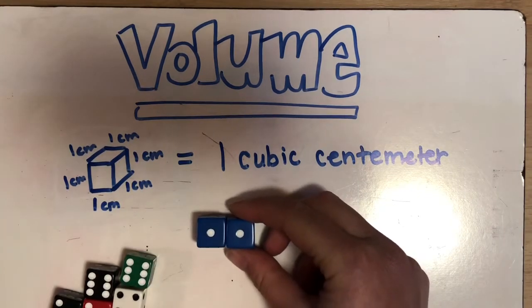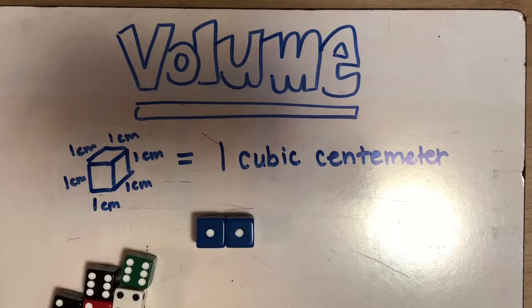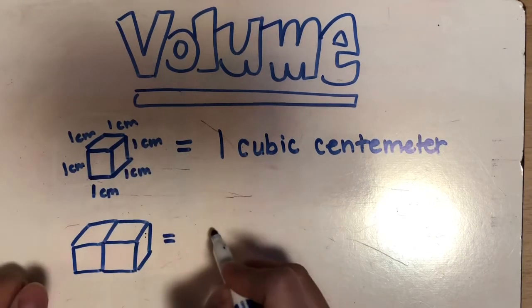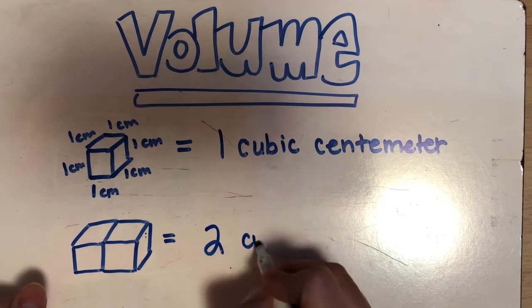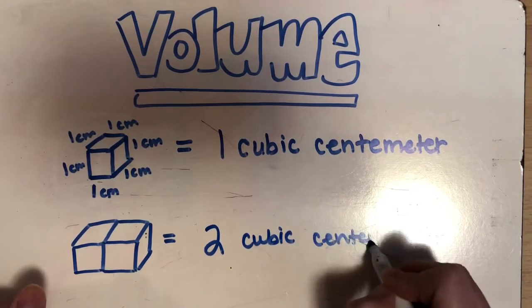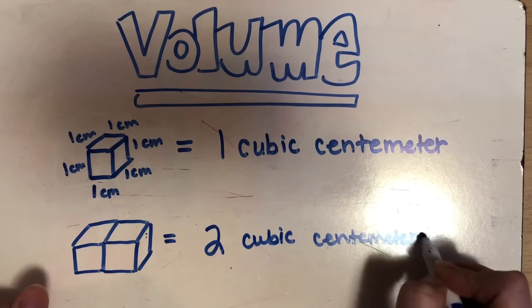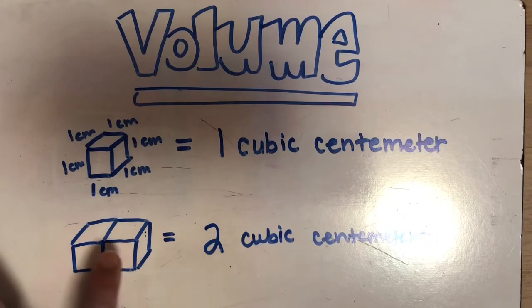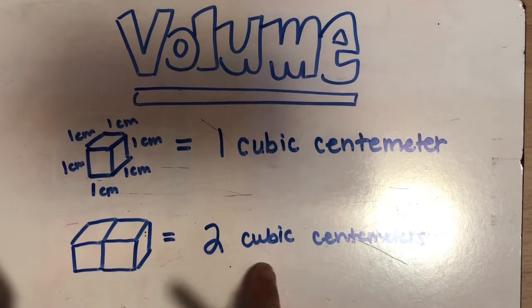If I have two dice, now I have two cubic centimeters. I have the same thing up here, I've just made it twice, so I would have two cubic centimeters. And you might be thinking, why is it called cubic? The reason it's called cubic is because these are cubes.